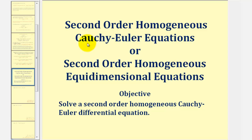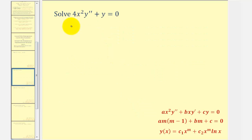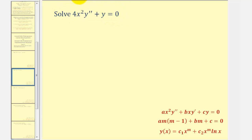Welcome to another example on how to solve a second order homogeneous Cauchy-Euler equation. We want to solve four x squared y double prime plus y equals zero. The first thing we should recognize is that we have a second order homogeneous differential equation, and that it's also a Cauchy-Euler equation because it fits this form here.